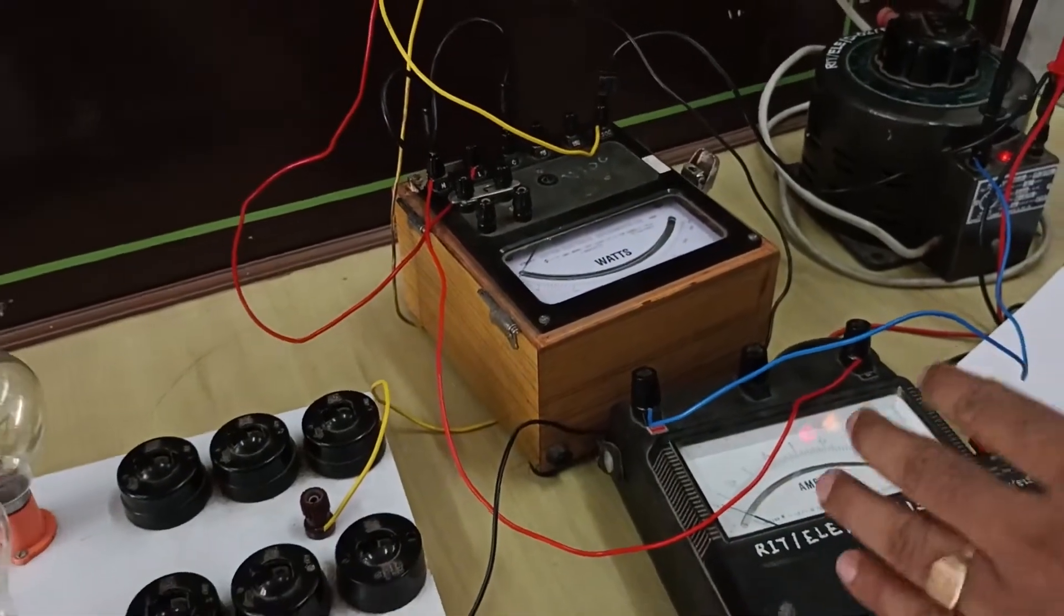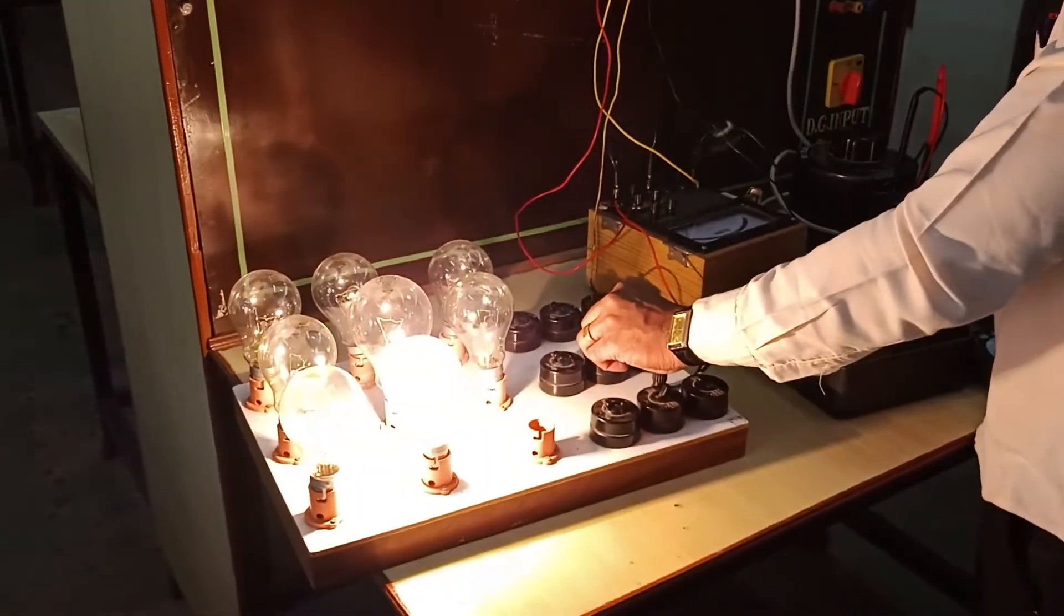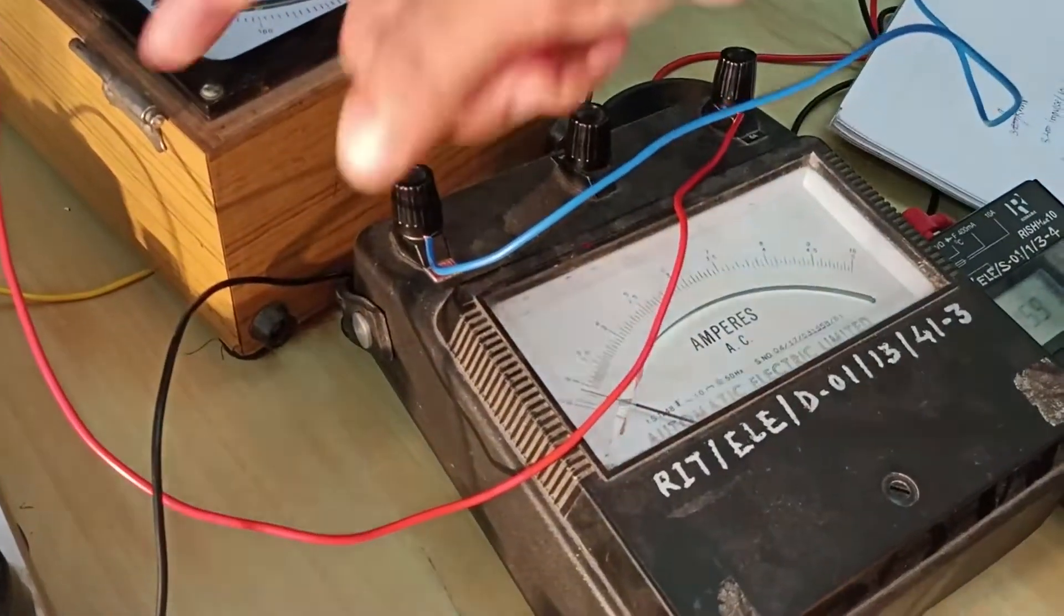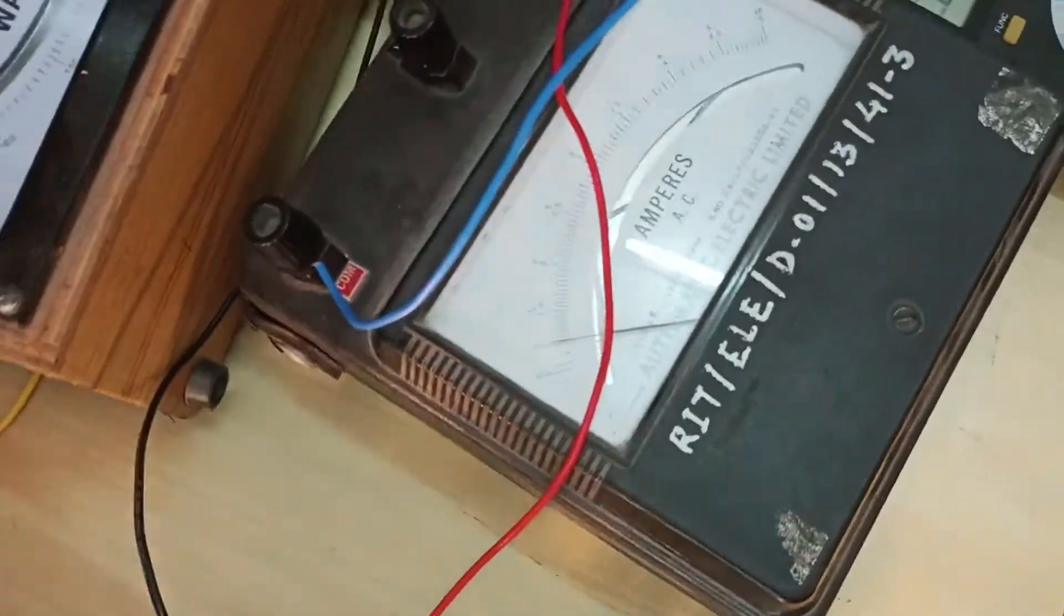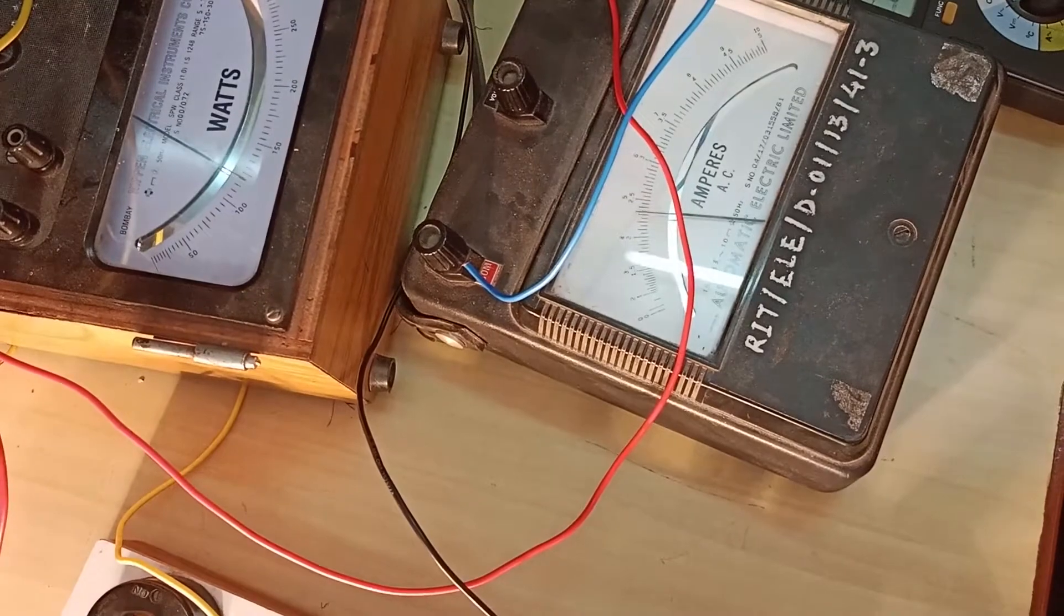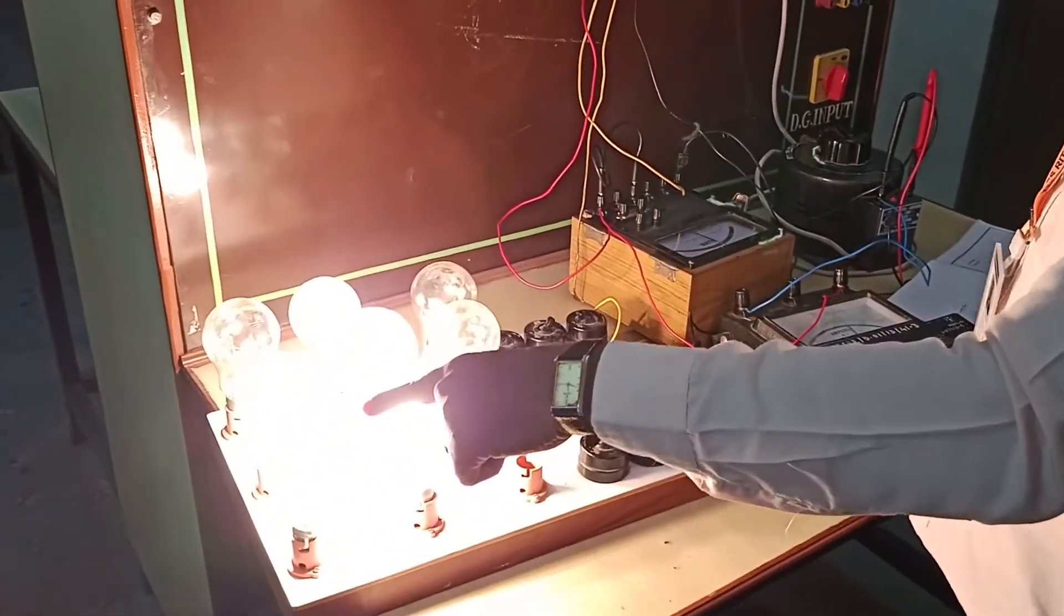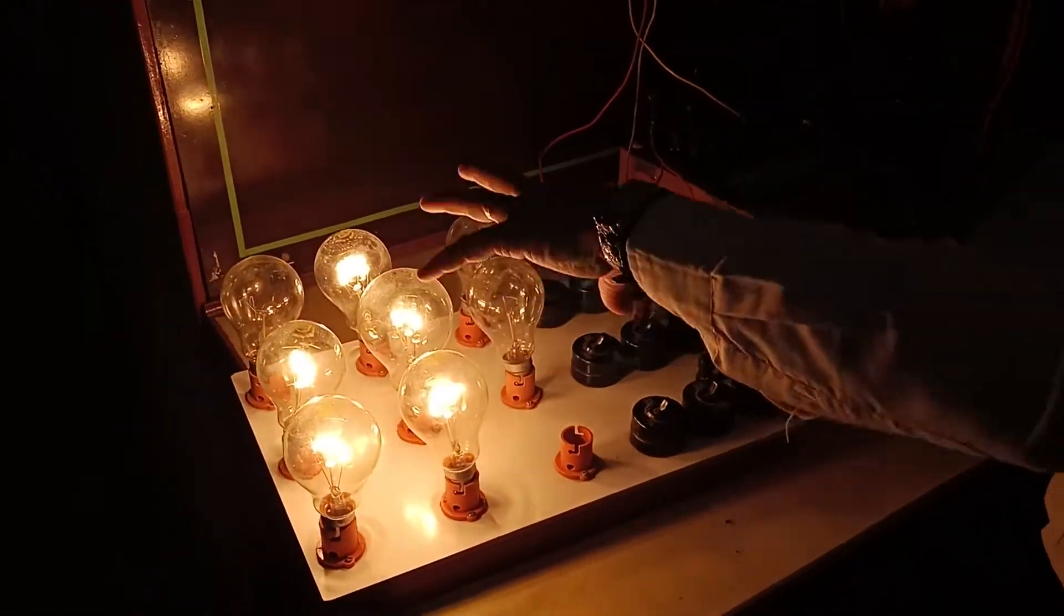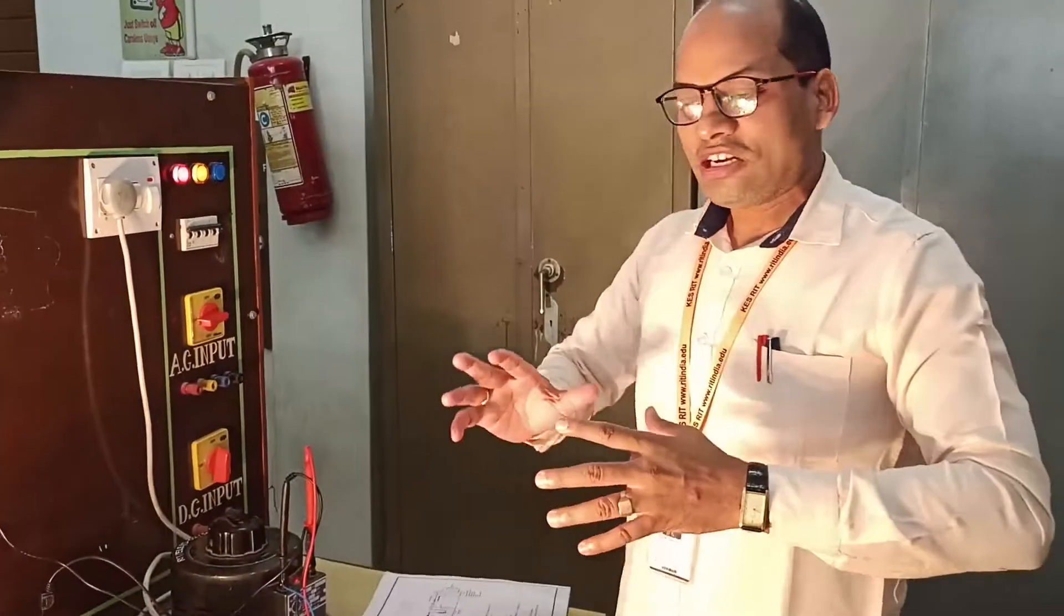Now I am going to increase the load because we need to show the consumption. As I am increasing the load the ammeter and wattmeter is increasing. Each resistive load bulb has rating of 200 watt, we have connected five bulbs so total is 1000 watt.